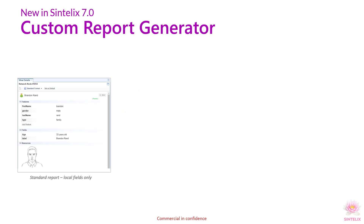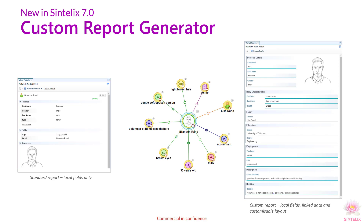Syntelix 7 introduces custom reports. The custom report generator reaches into the network to retrieve relevant information. In this example, a suspect's profile includes images, details, and relationships.